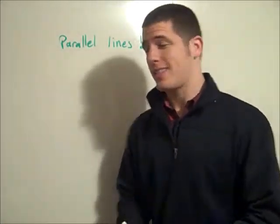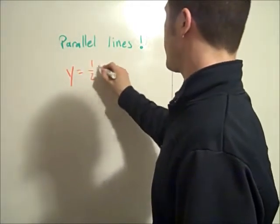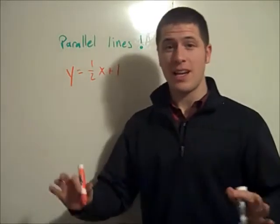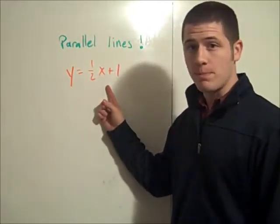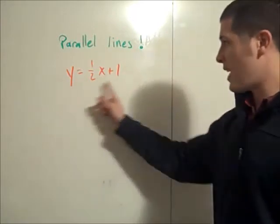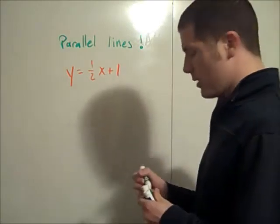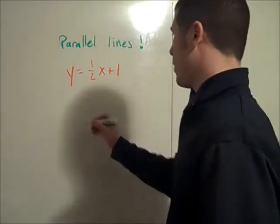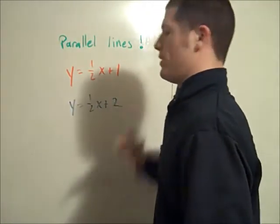So here's a very easy example. Given y equals 1/2x plus 1, find an equation, any equation of a line that's parallel to that one. Well to be parallel to this has to have the same slope. We're going to let it have a different y-intercept. So a line that's parallel to y equals 1/2x plus 1 might be y equals 1/2x plus 2.